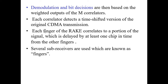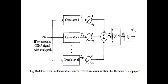You can ask why the name 'finger' comes here. Since we are using a number of correlators which perform the function of receiving, we can say we are using several sub-receivers, which are given the name 'fingers.' As you can see from the diagram, the incoming CDMA signal is taken in. The CDMA technology is more effective and is free from interference.